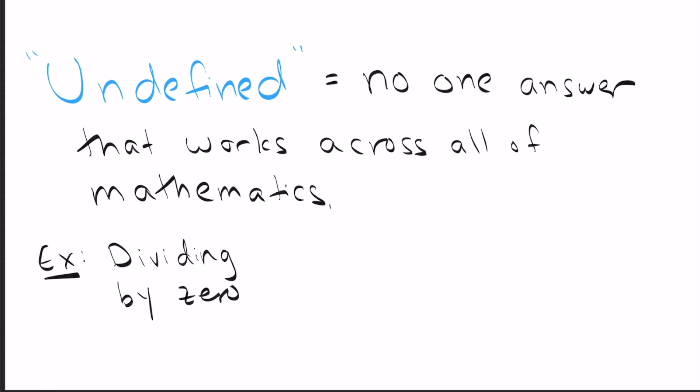So you may have also heard the term undefined in math. Your teacher may have said that dividing by zero is undefined. What does undefined mean? Undefined means that there's no one answer that works across all of mathematics. If you want an example of this, watch my video on why we can't divide by zero. On the other hand, there are times when we can define things in a way that does make sense across all of mathematics, even if it's weird. An example of this is taking x to the zero and saying this equals one.